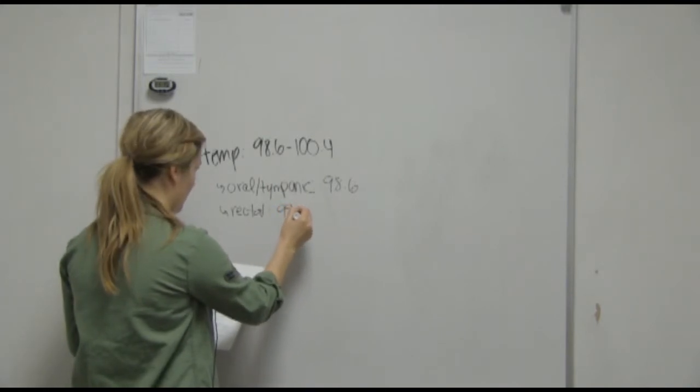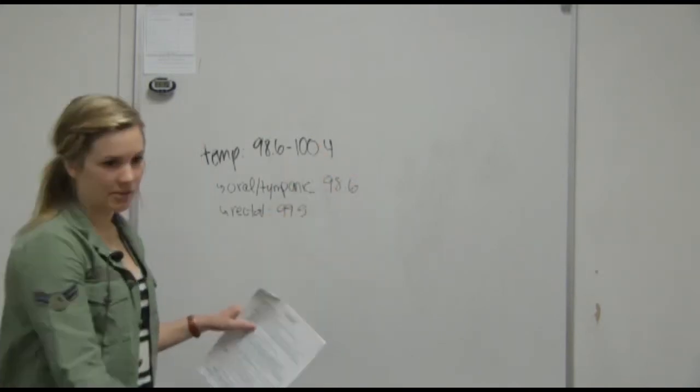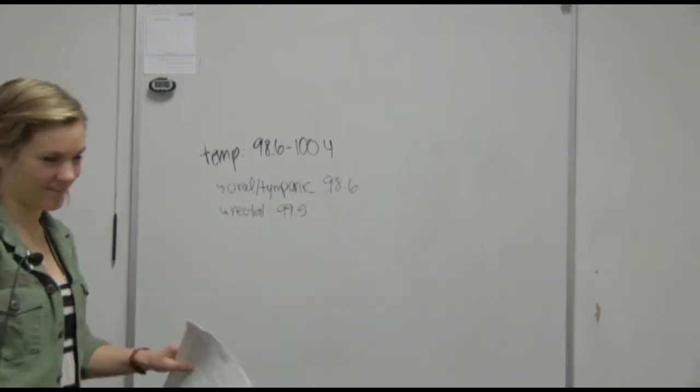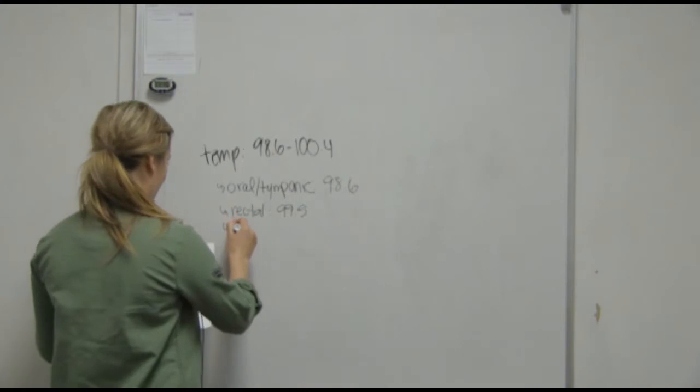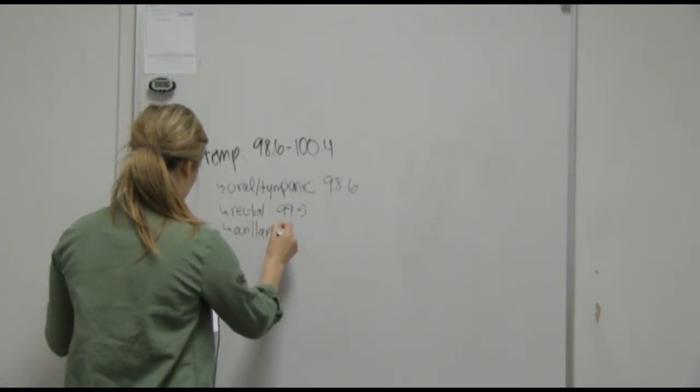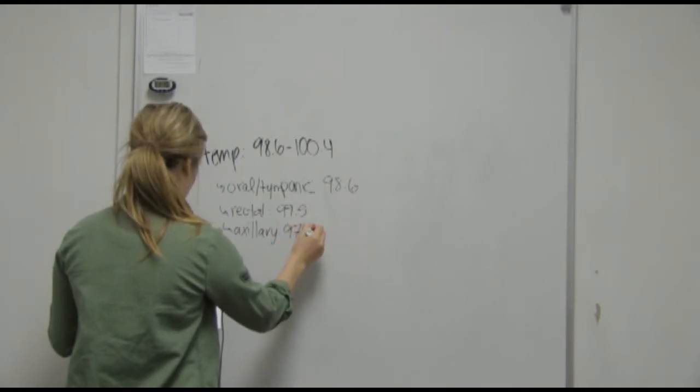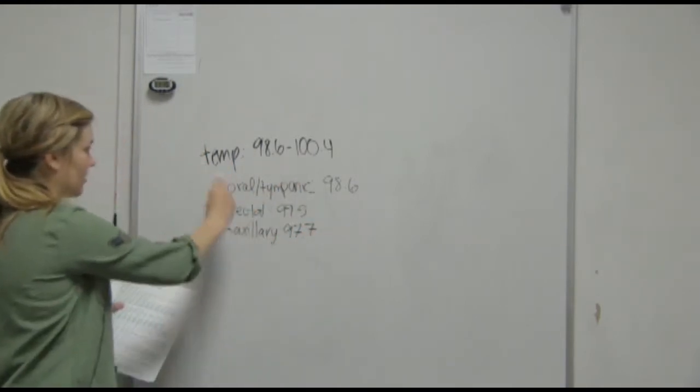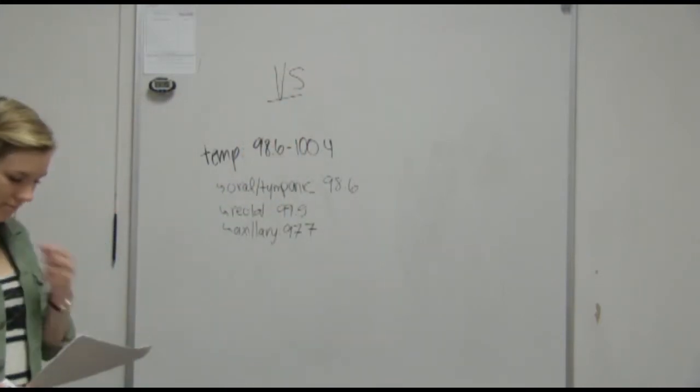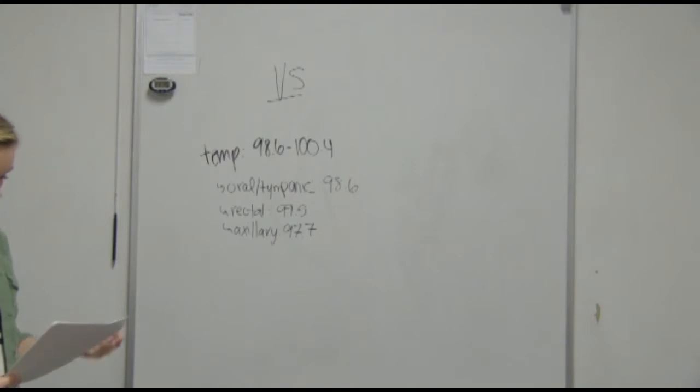And then you have rectal, which is 99.5, and this is all in Fahrenheit. So I'm from Canada, so I was like 'are you serious,' but it's Fahrenheit, not Celsius. And then we have axillary, which is your armpit, and this one tends to be 97.7. So these are the normals for temperature, for vital signs. They will ask you a question about where they're giving it and what the temperature would be. Make sure you just memorize these and know them.